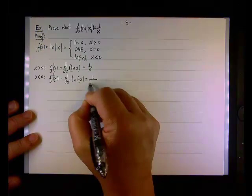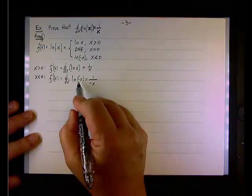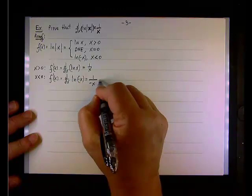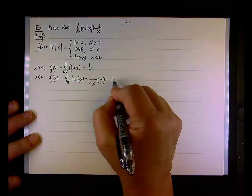So we'll end up having 1 over u, which is 1 over negative x. And then du/dx, the derivative of negative x is negative 1. So multiply it out, we get back to 1 over x.